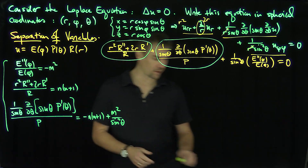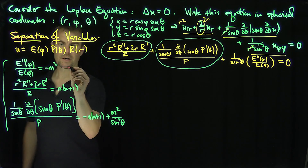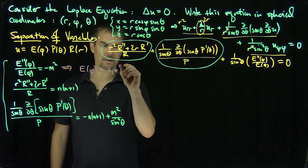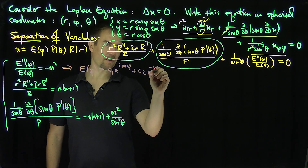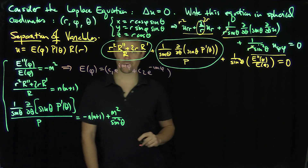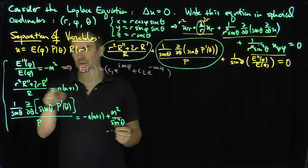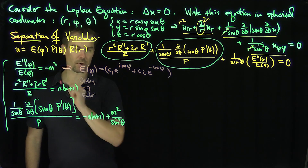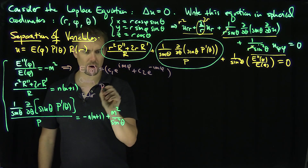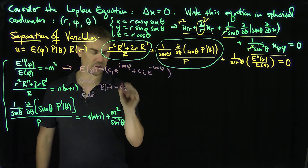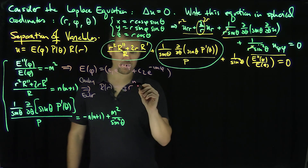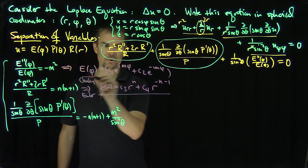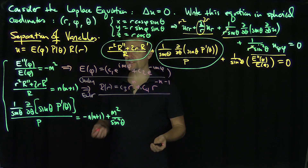The first two equations are straightforward. The phi equation gives E(φ) = c₁e^(imφ) + c₂e^(−imφ), which can be written in terms of sines and cosines. The R equation is a Cauchy-Euler equation, giving R(r) = c₃r^n + c₄r^(−n−1). Now we focus on the theta equation.